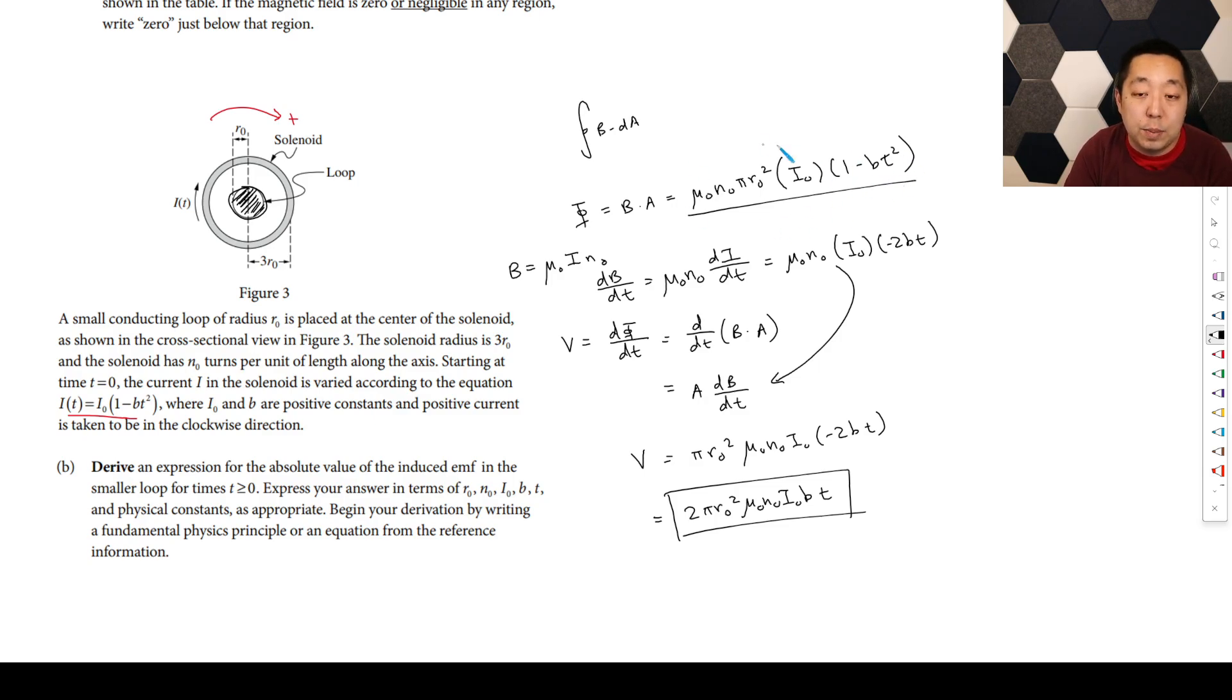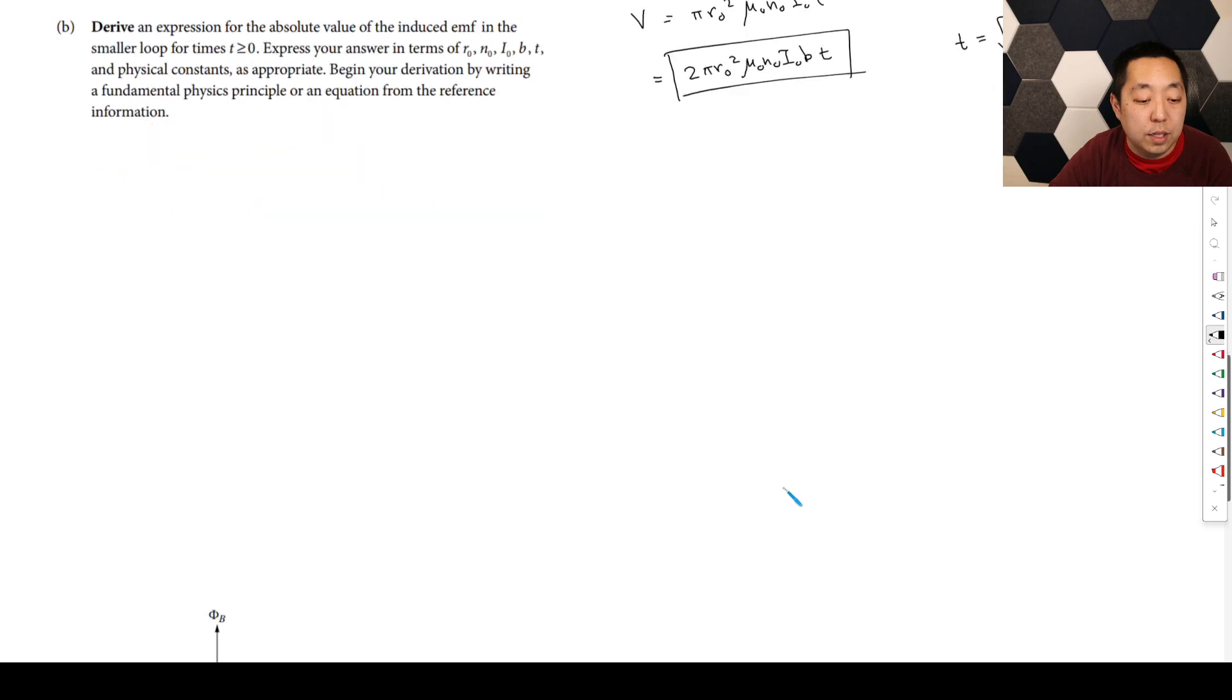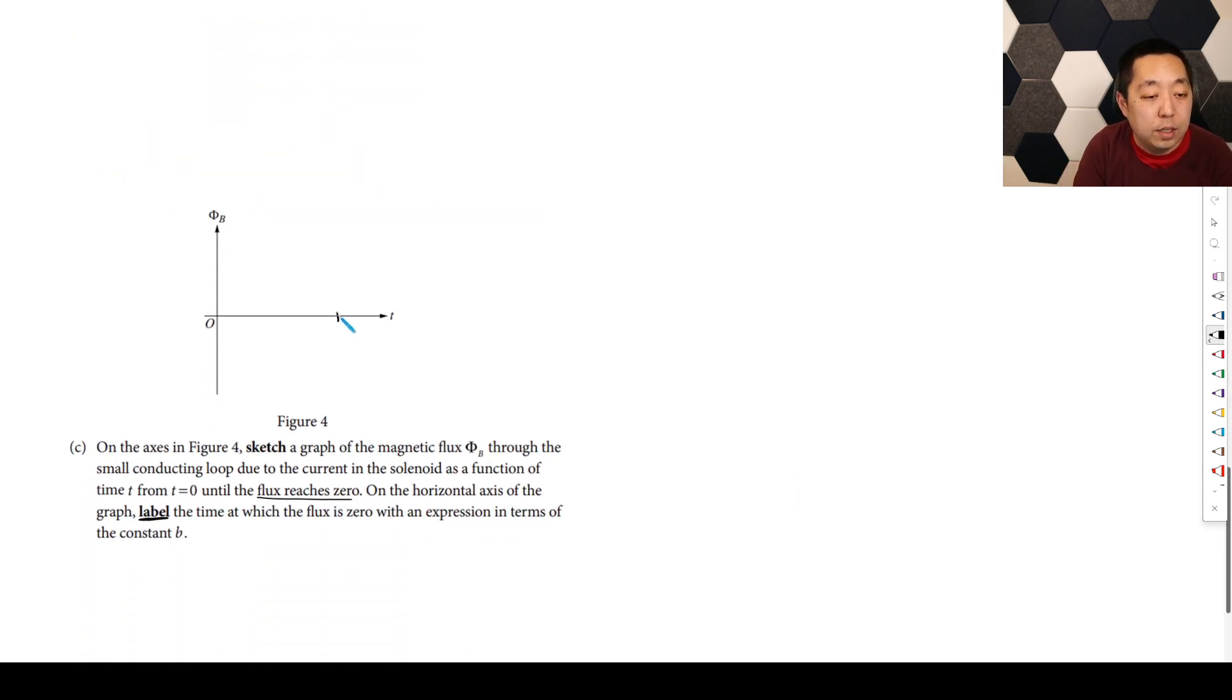So at time zero it's going to be maximum, and then it's like a quadratic in t. And when is it equal to zero is when this guy is equal to zero, because these are all constants. So we want to know when 1 minus BT squared is equal to zero. And that's going to occur at one over B and then square root. So we're going to say one over square root of B is when.